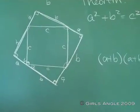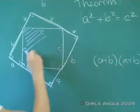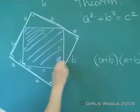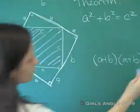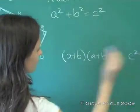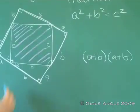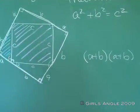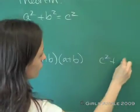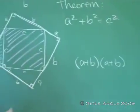We have the small square, which has area c times c, and we have these four triangles. So we have to add four times the area of each of these triangles.